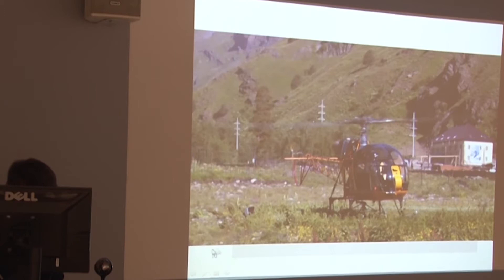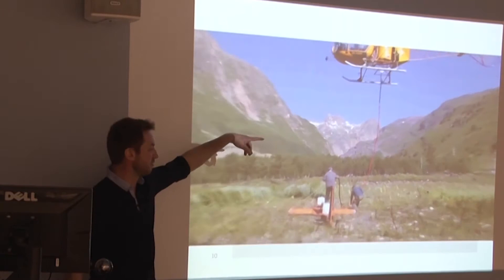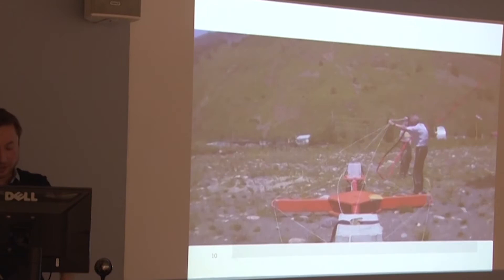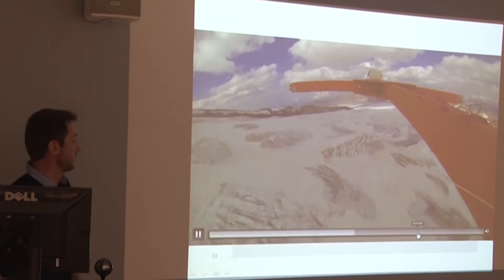Just to illustrate how it worked — here is a little footage. This is the transmitter and receiver, and the helicopter takes it with a non-metallic cable — it's important not to have additional reflections from a metal cable. Then it flies over the glaciers like that.